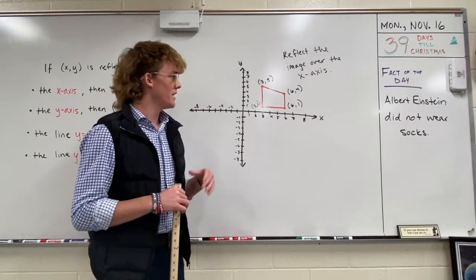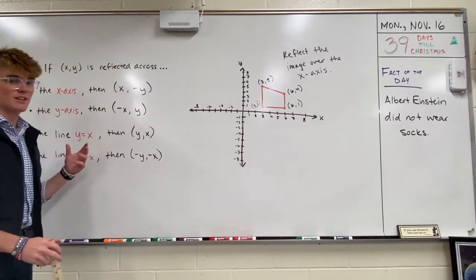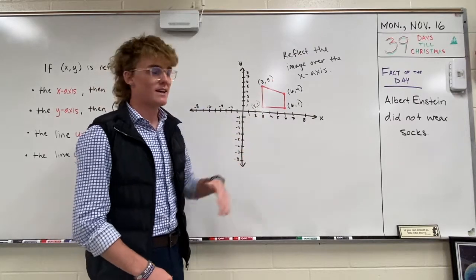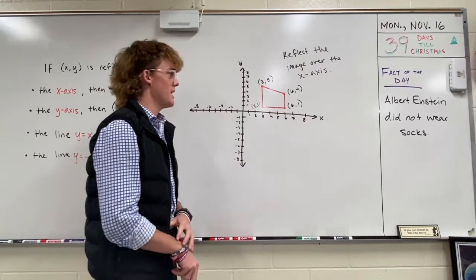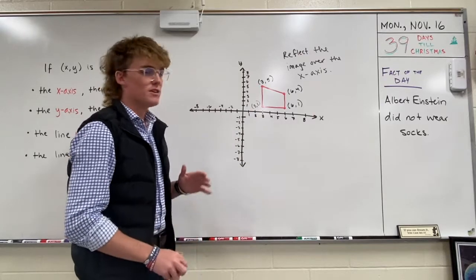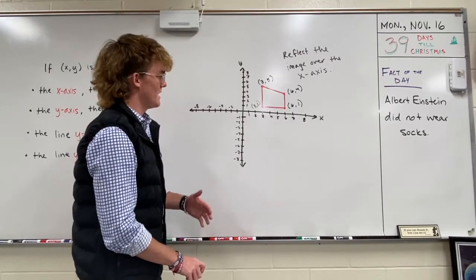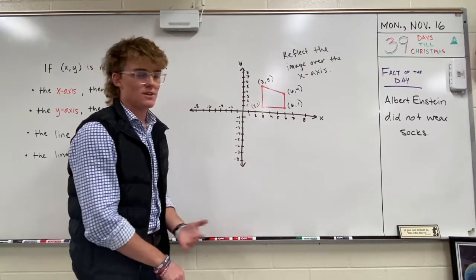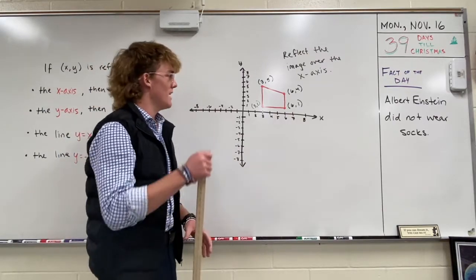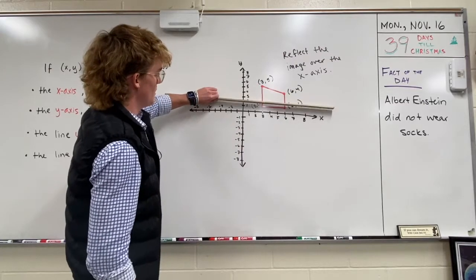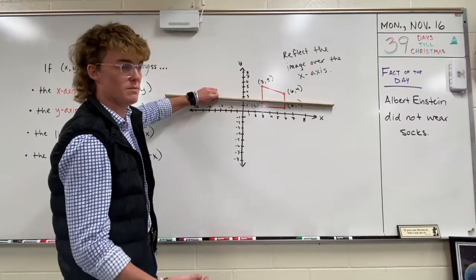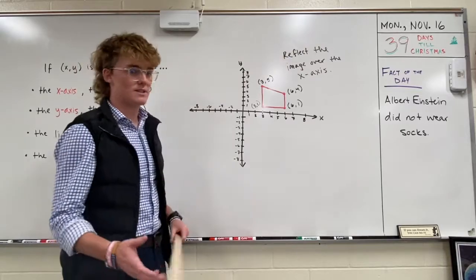Continuing on what we learned yesterday about reflections, here are the four patterns we talked about: flipping over the x-axis, the y-axis, y equals x, and y equals negative x. Today we're going to look at reflecting images or shapes using those same patterns. We'll also cover what happens if the shape is on the line we're reflecting over, and then add one more concept — what if we flip over a line like y equals 2? We're going to discuss that today.